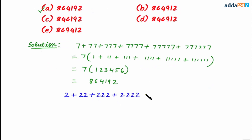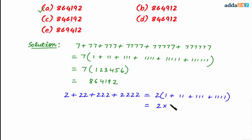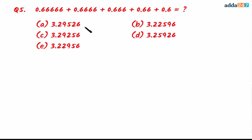For better understanding, let's take another example with 2s having four terms. Taking 2 as common, inside we have 1 + 11 + 111 + 1111. Since there are four terms of all ones, the sum goes 1-2-3-4, giving 1234. So the answer is 2 multiplied by 1234, which equals 2468.